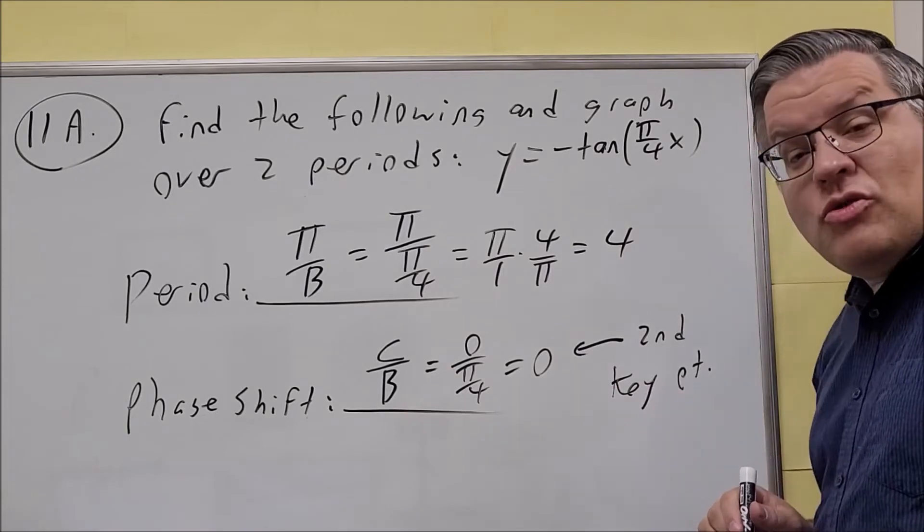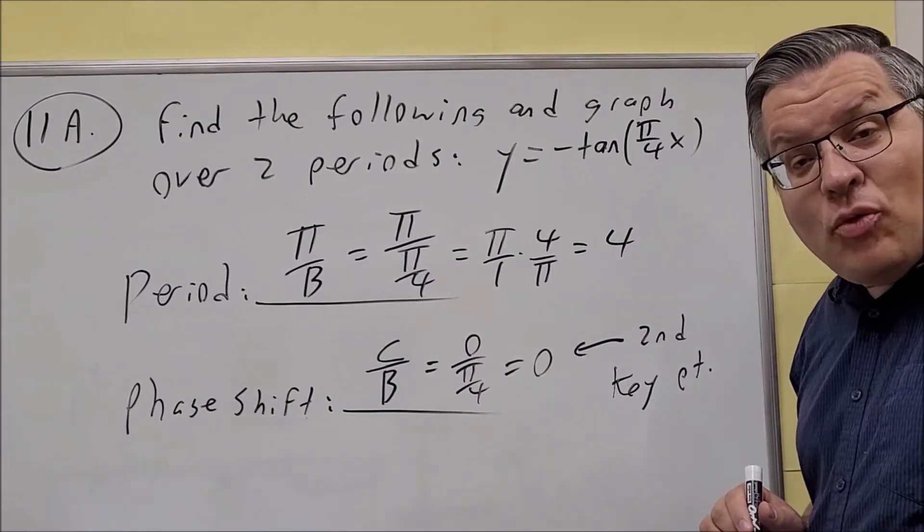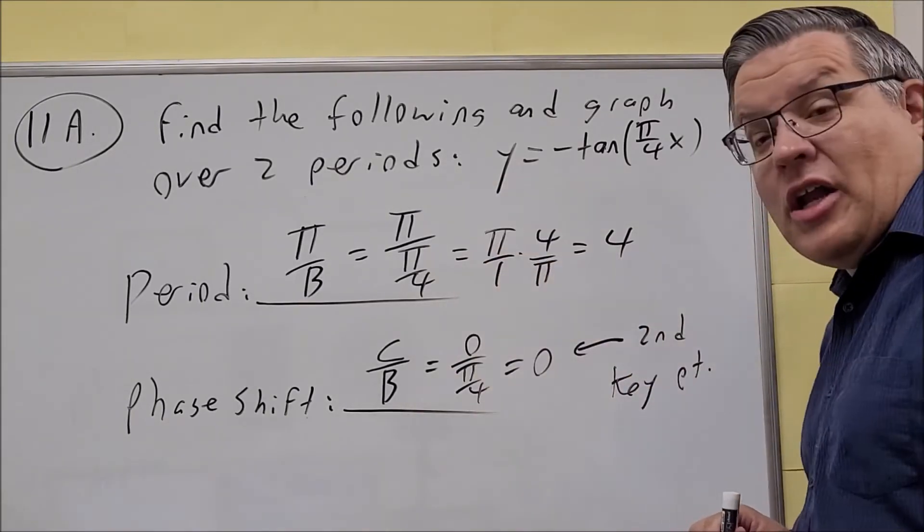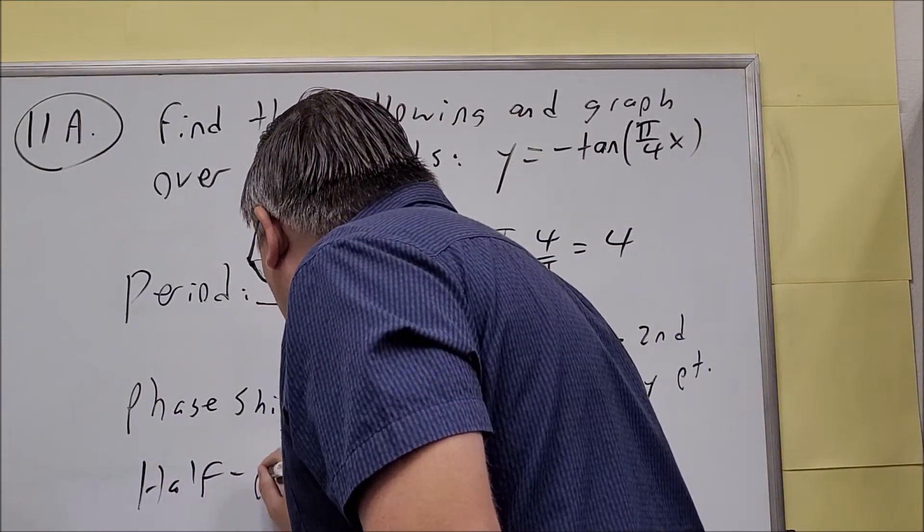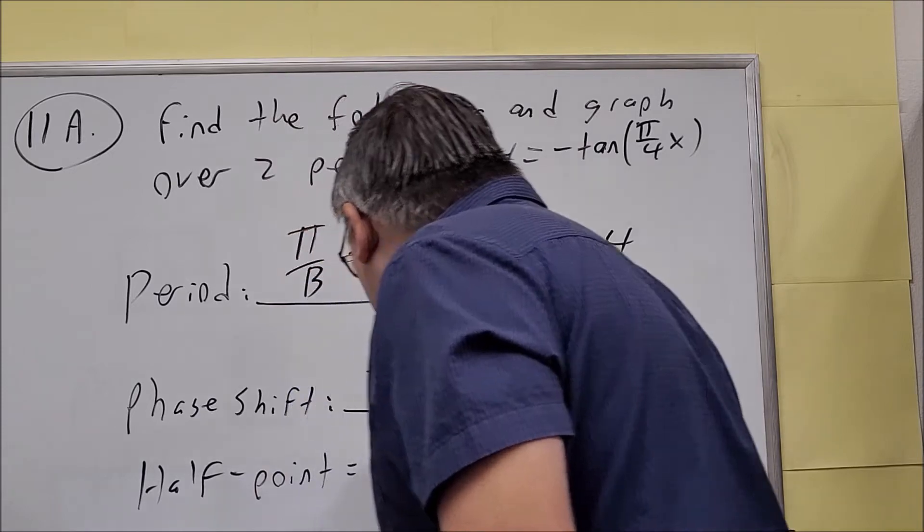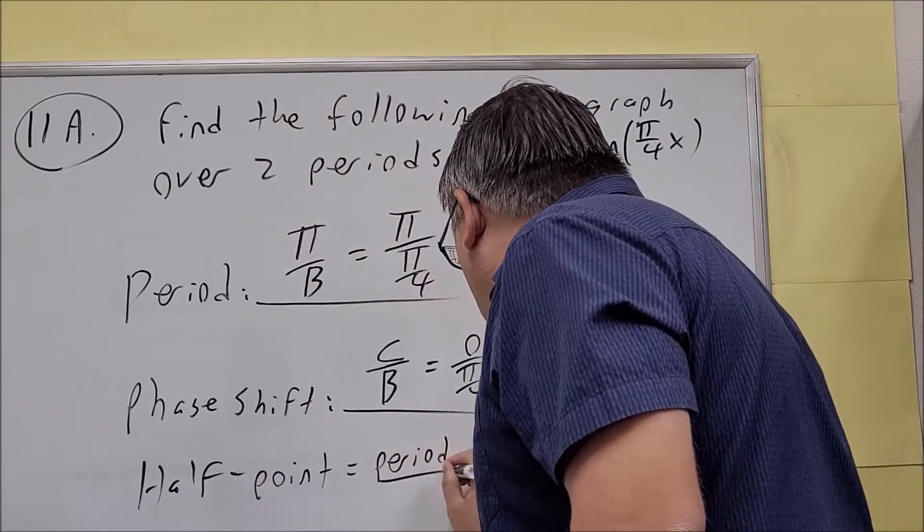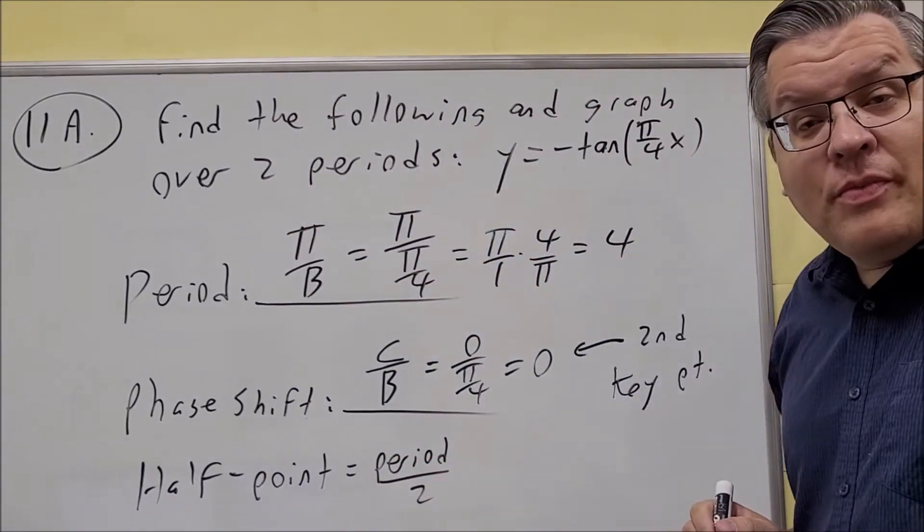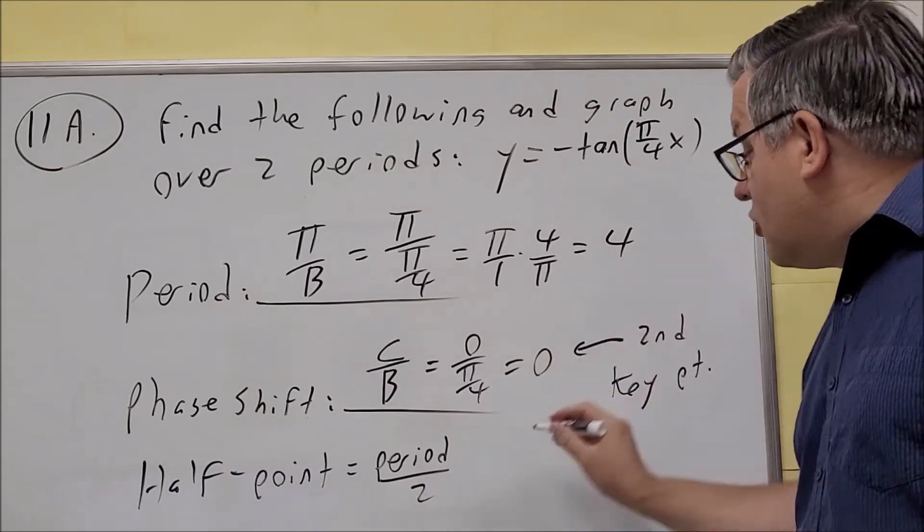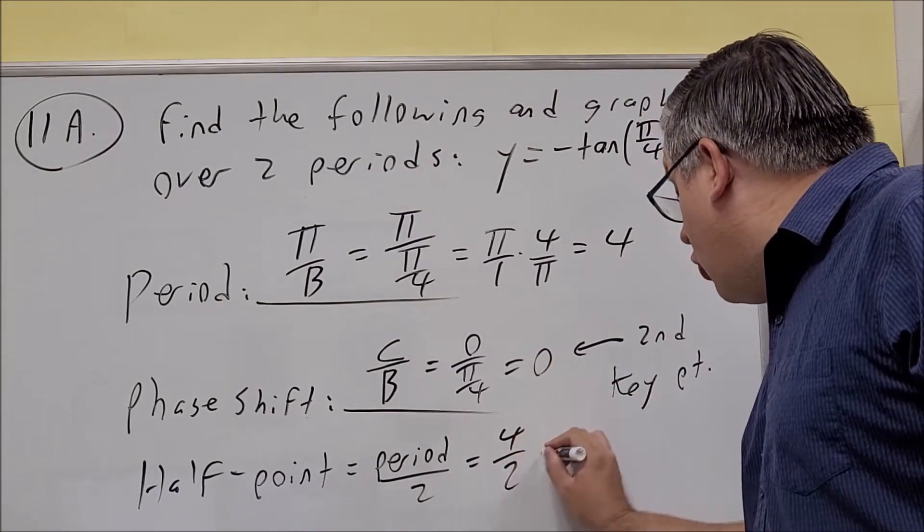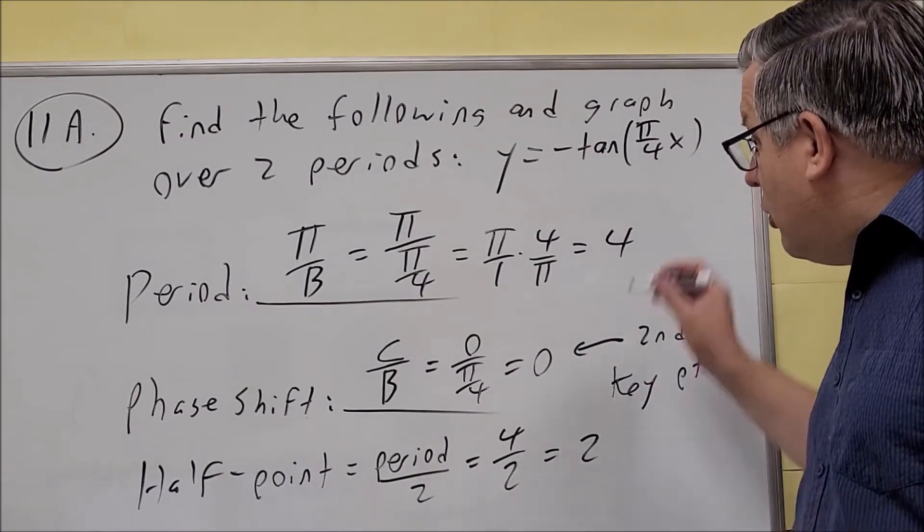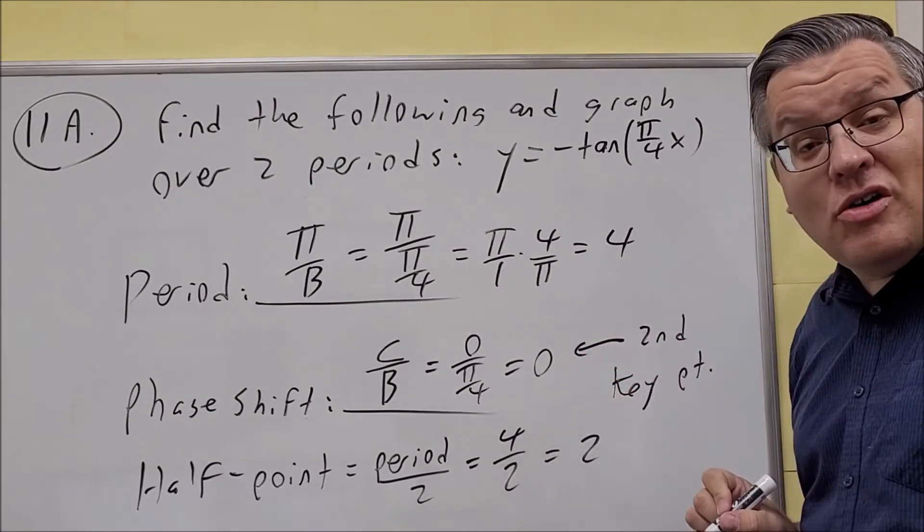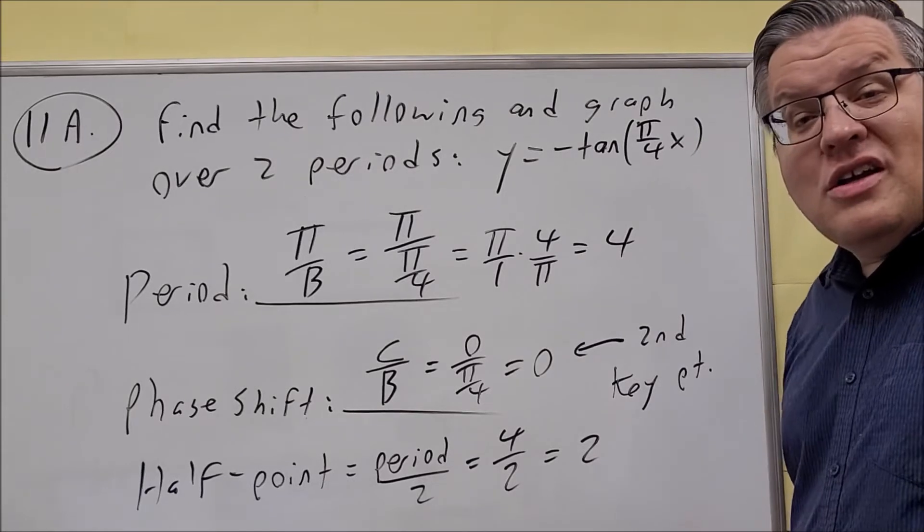Now to find the other key points, we need the half point. The half point is your period divided by 2. The period here is 4, so we have 4 over 2, which equals 2. So the period is 4, the phase shift is 0, and the half point is 2.